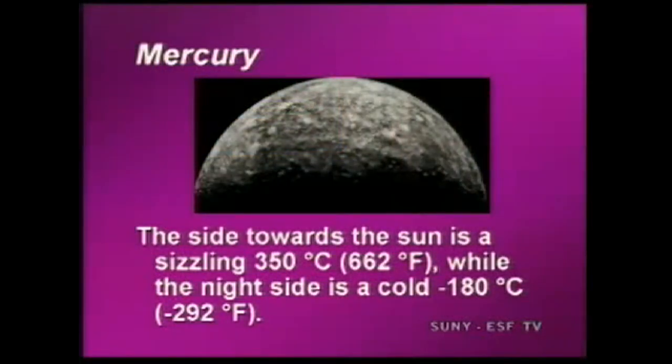Now, let's take Mercury, for example. Mercury very close to the sun, and as you'd expect, the side that faces the sun is really hot. Right here, it says 350 degrees Celsius. But on the night side, it's really cold, minus 180 degrees Celsius. So huge difference.